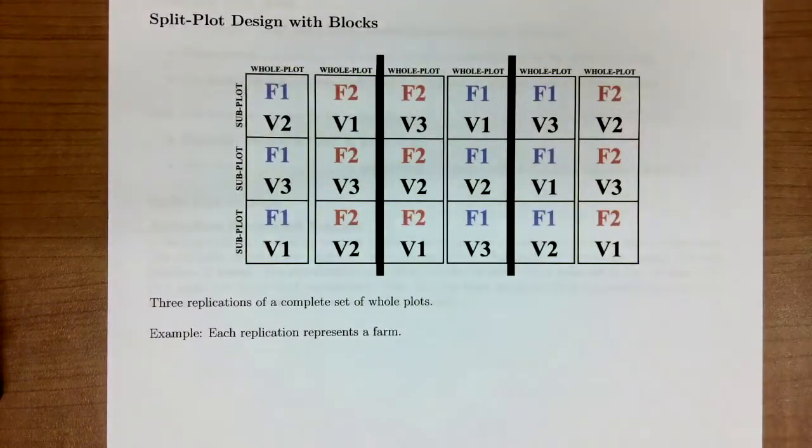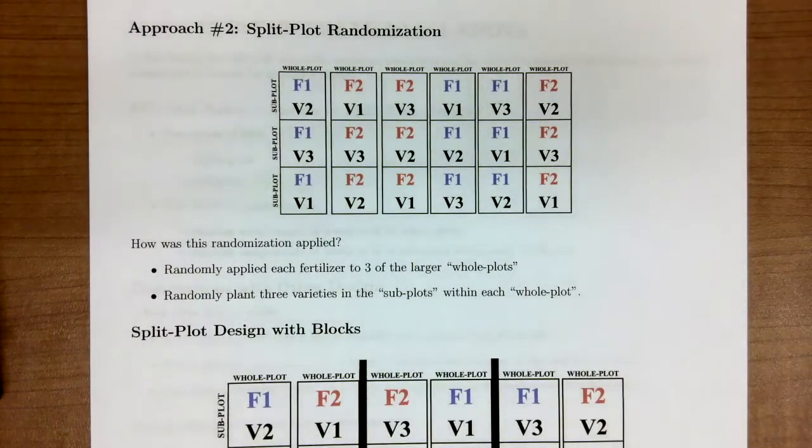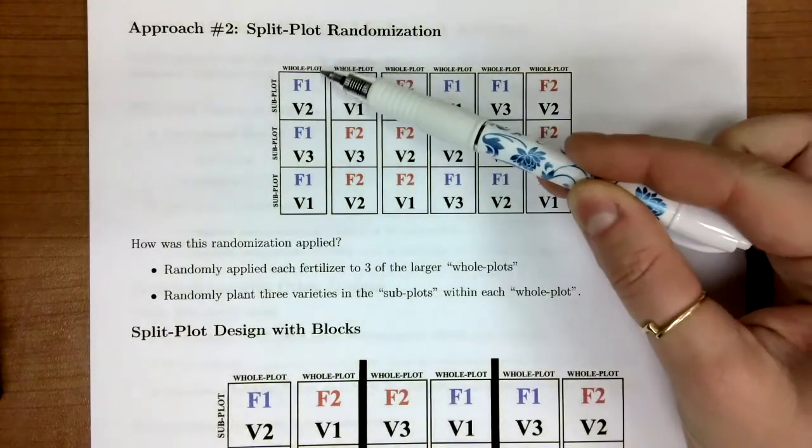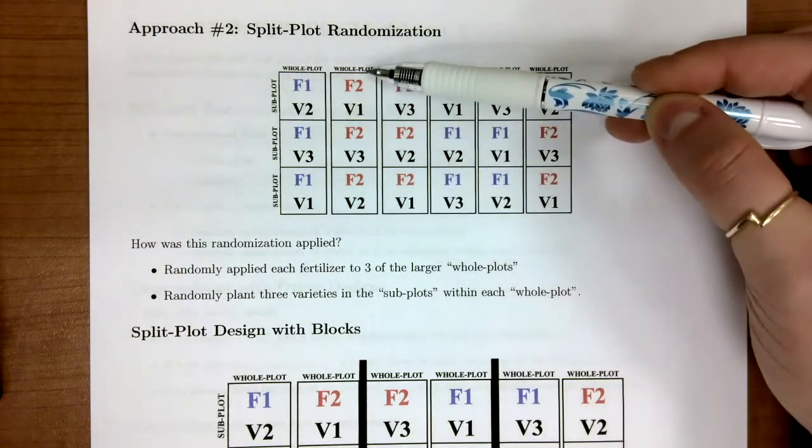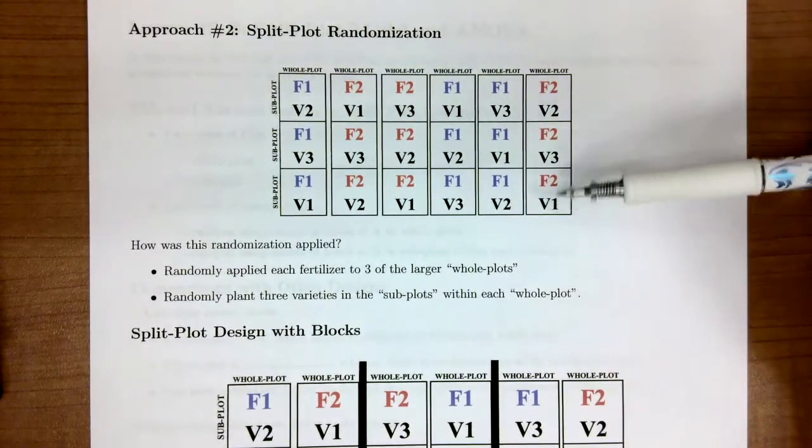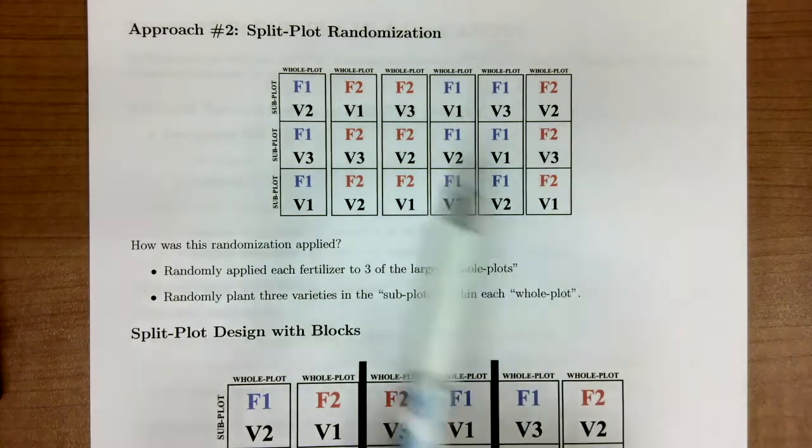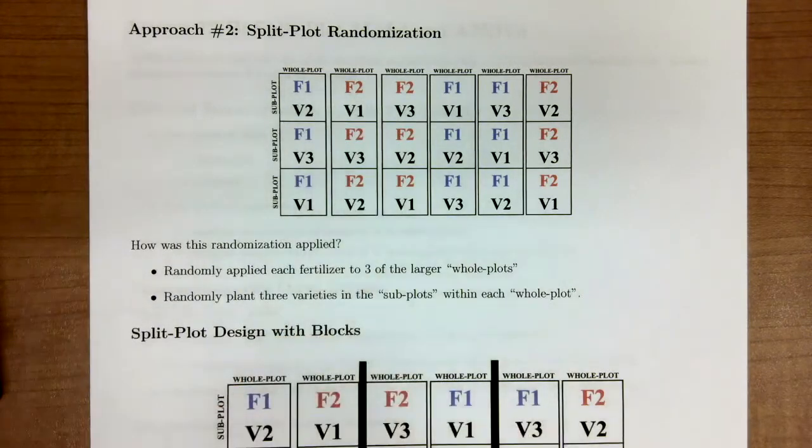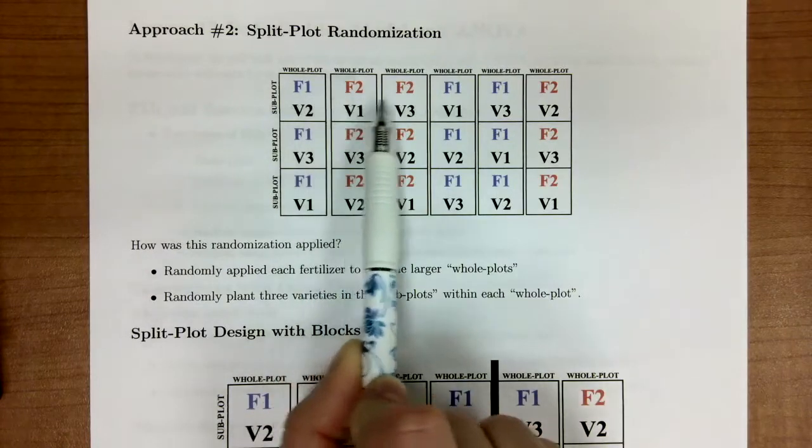A better error control design for this specific example would be to do a split plot randomization. What would happen is we would have a whole plot, and we would apply fertilizer one to this whole plot. Then we would apply fertilizer two to this whole plot, fertilizer two to this one, one, one, and two. So we have one, two, three, four, five, six whole plots, which we randomly assign either F1 or F2 so that we can stay in a balanced design. Each fertilizer is seen in the whole plots three times.